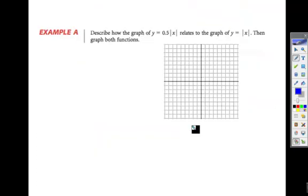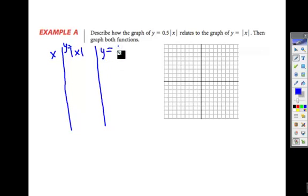Example A, describe the graph of y equals 0.5 times the absolute value of x and relate it to the graph of y equals the absolute value of x. So we know that y equals the absolute value of x is our parent function here. So let's get down maybe a table here. Let's have some x values and then some absolute value of x values. This would be y equals the absolute value of x. And then let's have some y equals 0.5 times the absolute value of x values.